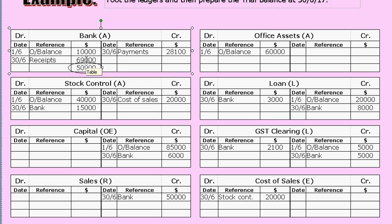We added up the big side, which was the debits, and took away the little side, the credits. The difference was $50,900 — that's the footed balance. That means at this point in time, the bank account has a balance of $50,900, recorded on the debit side because the debits were greater than the credits.